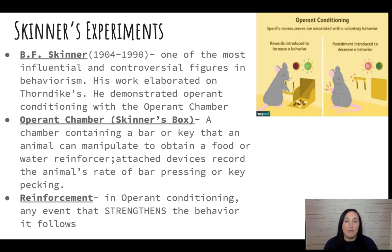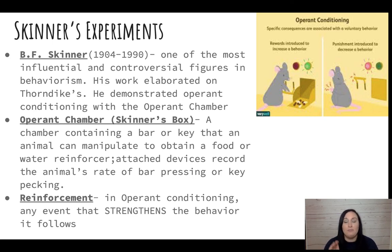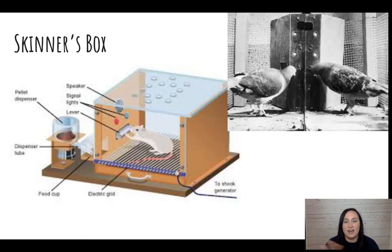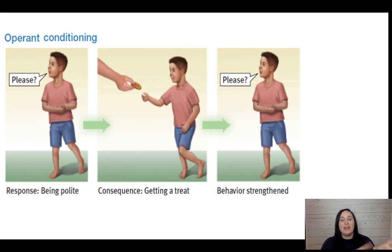B.F. Skinner created the operant chamber, also known as Skinner's box. This is a chamber that contains a bar or a key that an animal — he tested this with rats and pigeons — could manipulate to obtain food or water. They also had a device attached to record the rate of their bar pressing, or if it was a pigeon, the rate of their key pecking. This demonstrated the idea of reinforcement, which is any event that strengthens the behavior that it follows. The whole idea of operant conditioning is focused on the consequence of the behavior — the behavior happens, and then it's about what happens after.